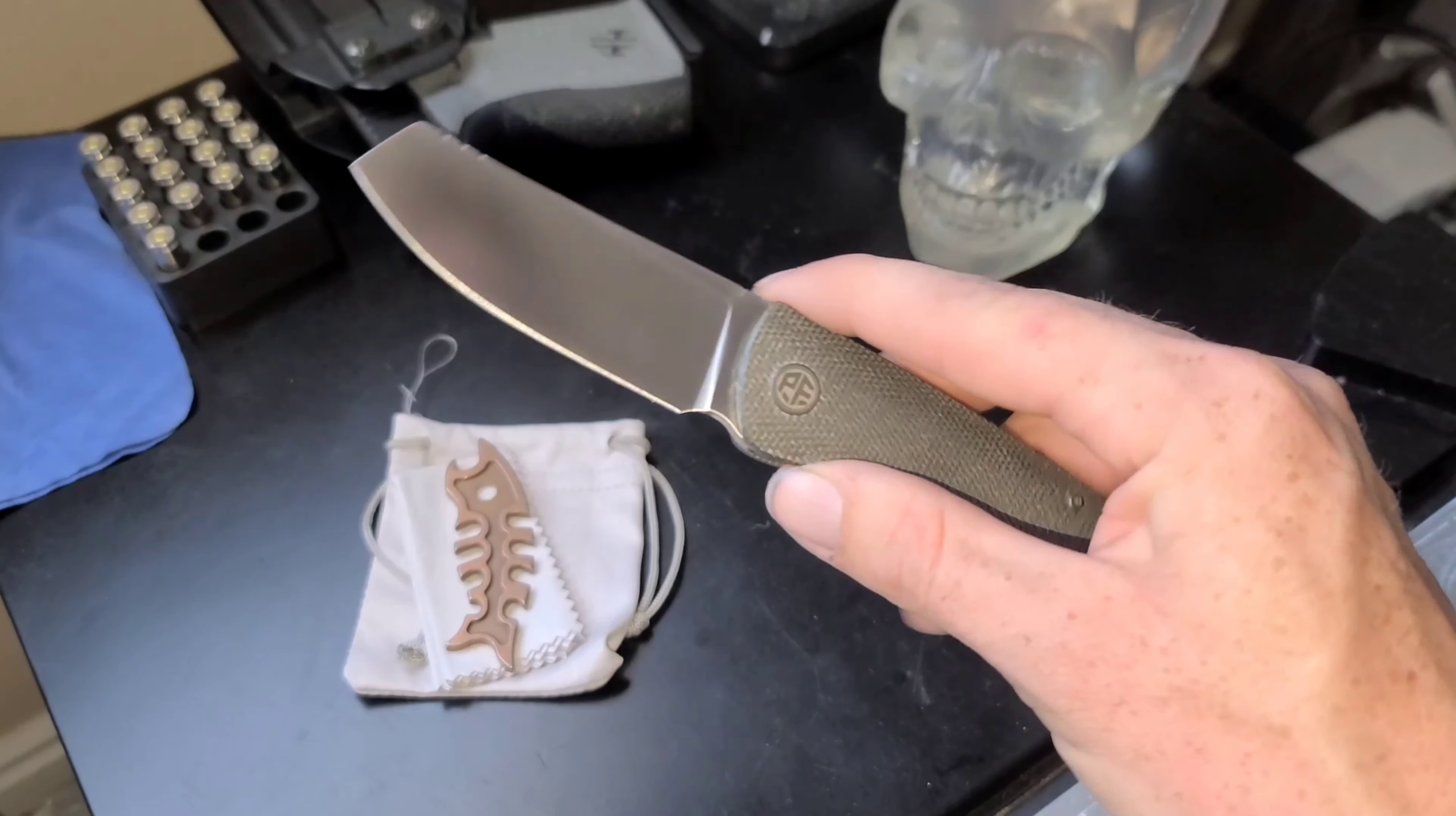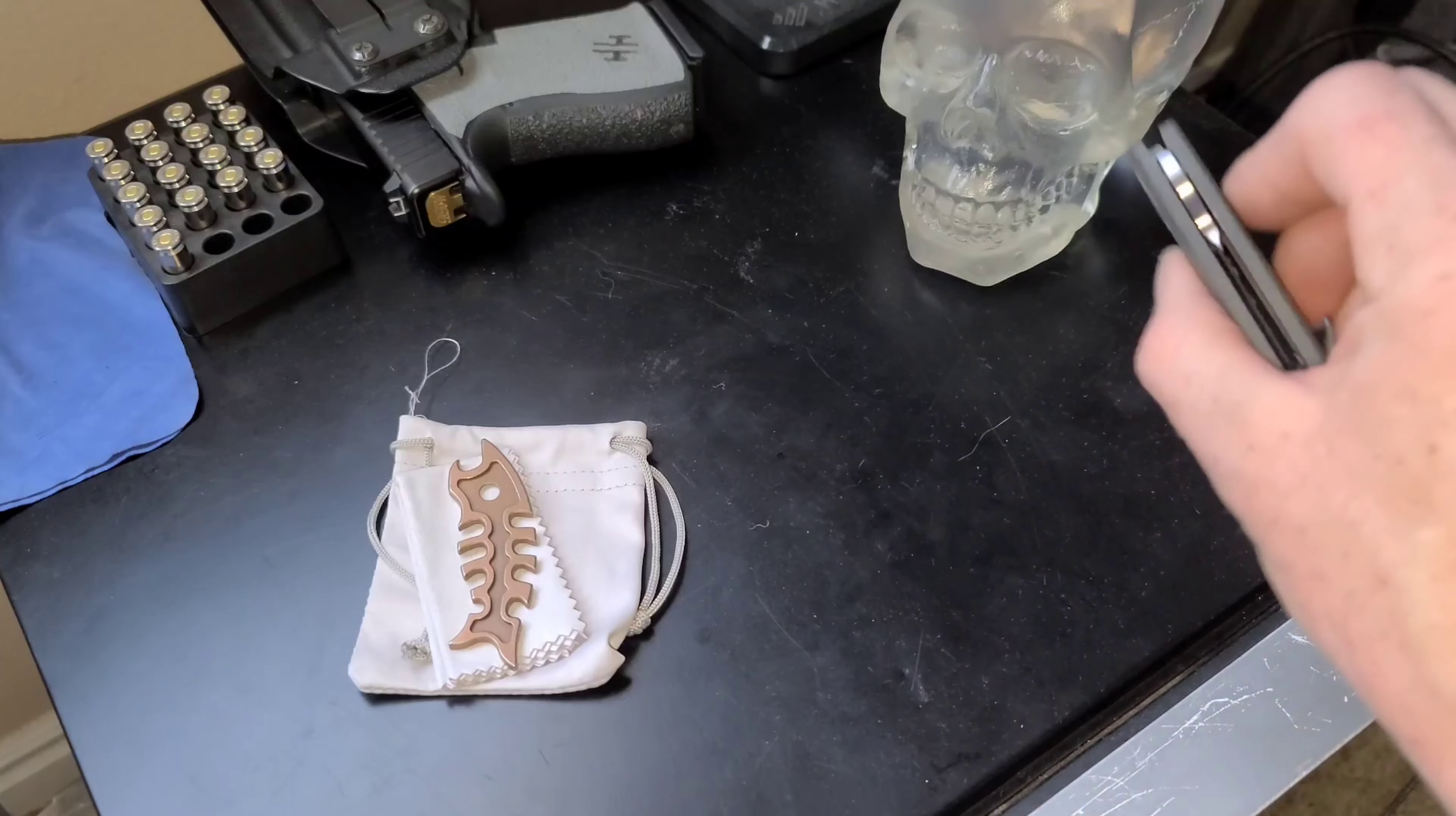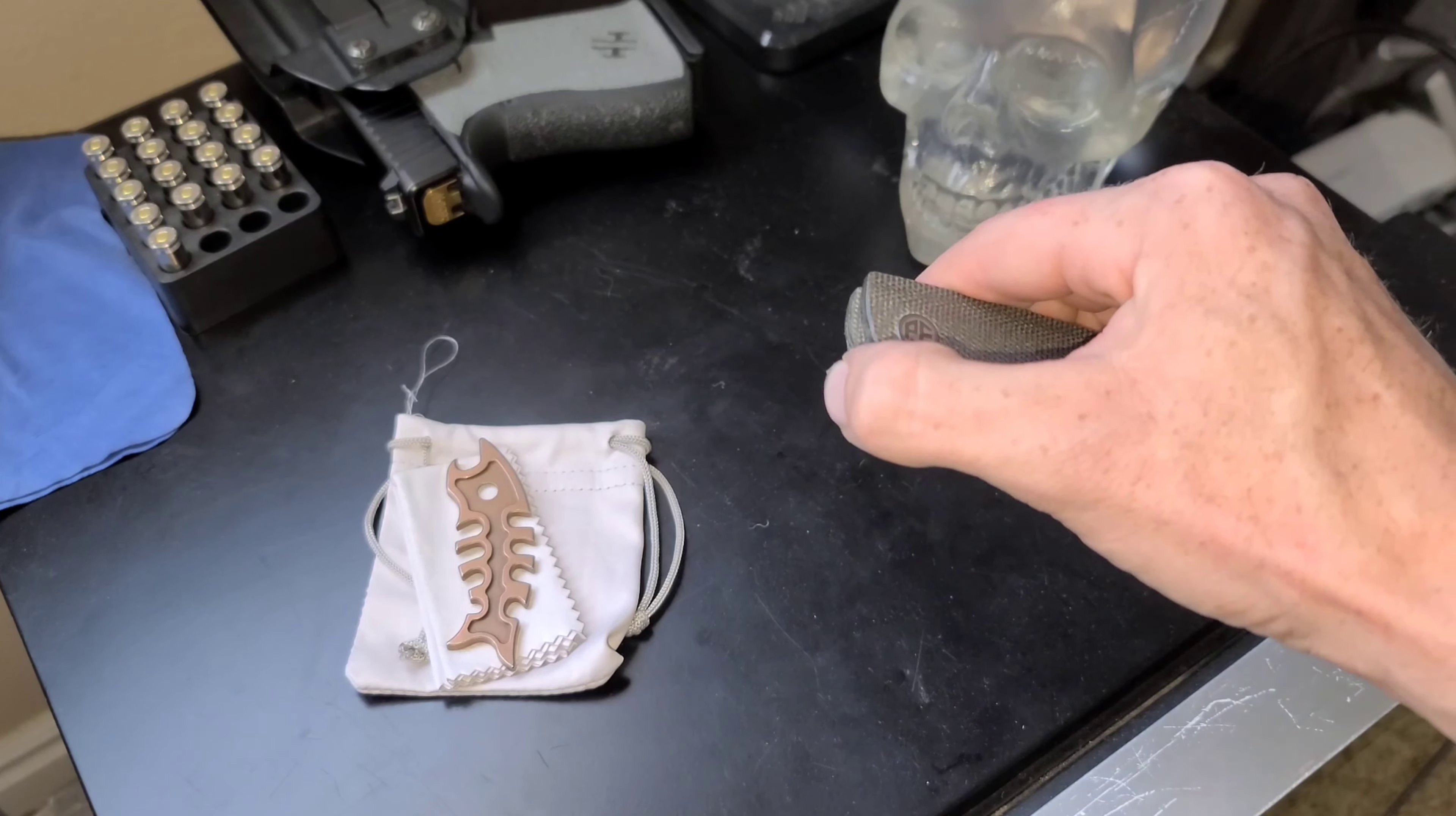And I did test this out on some cardboard. I sliced through quite a bit of cardboard and then I tested the edge retention afterwards just to see how it held up. And it held up surprisingly well. I was still able to slice through receipt paper with ease. I was able to make squiggly lines through the receipt paper after cutting some cardboard. And it was a decent amount. It wasn't like a crazy amount of cardboard, but I was slightly impressed.